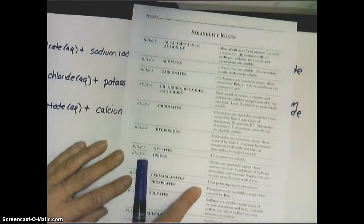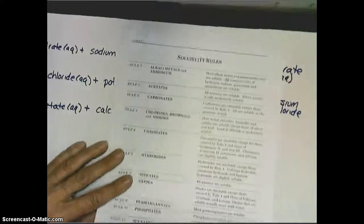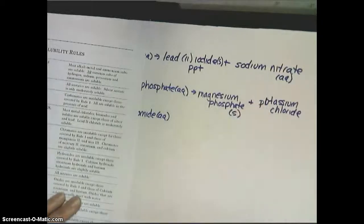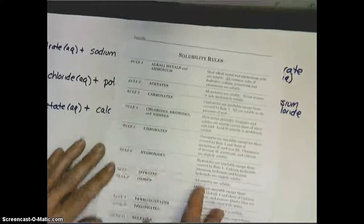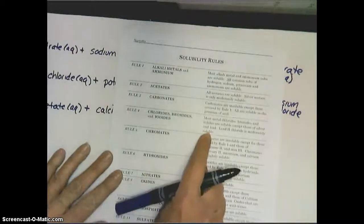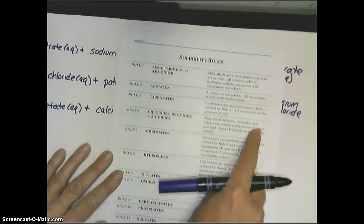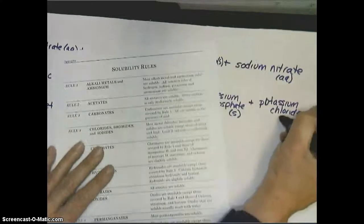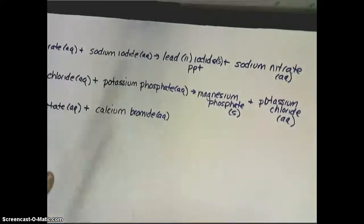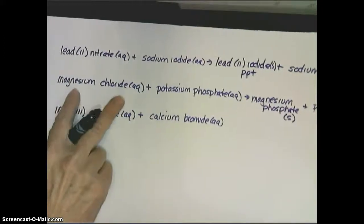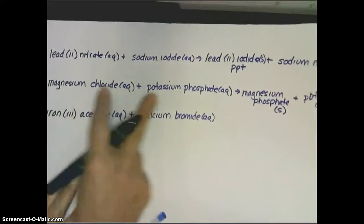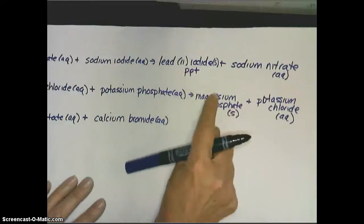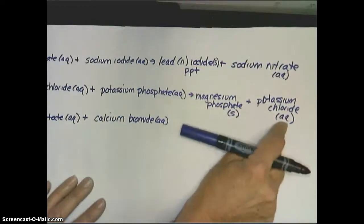What about that phosphate? Well, phosphates are insoluble unless covered by rule 1, but in this case, it isn't. So, magnesium phosphate is our precipitate and that's our solid. And what about potassium chloride? Chlorides are soluble except for those of silver and lead, so potassium chloride is soluble. We have magnesium phosphate as our precipitate, and potassium chloride still floating around separately. When the magnesium found the phosphate, the lattice energy was so strong that they stayed together as a solid.